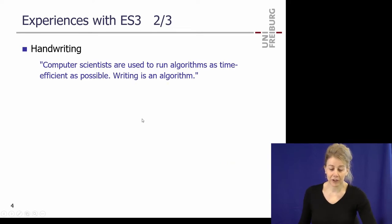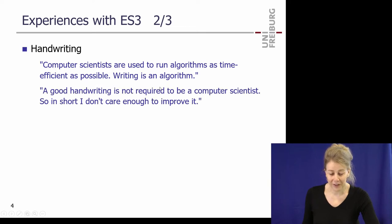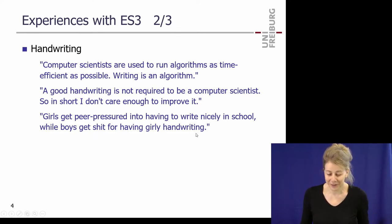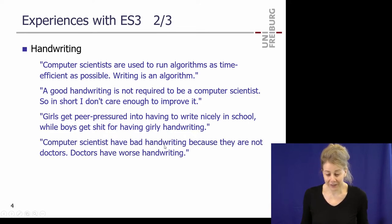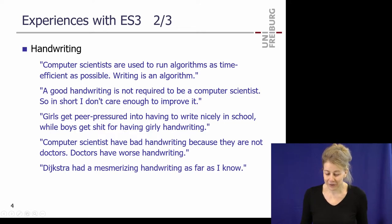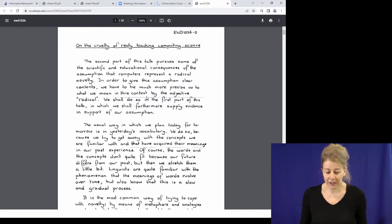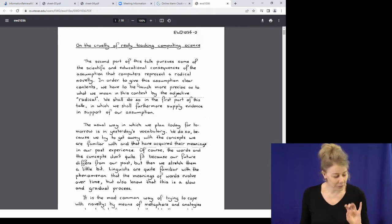On handwriting — some comments: 'Computer scientists are used to running algorithms as time-efficiently as possible. Writing is an algorithm.' Very matter-of-factly. 'It's not required to be a computer scientist. I don't care enough to improve it.' 'Sexism in 2022 is still very real. Girls get peer pressured into having to write nicely. Boys get flak for having girly handwriting.' 'Computer scientists have bad handwriting because they are not doctors — doctors have worse handwriting.' Dijkstra had a mesmerizing handwriting. He was a very special, strong, opinionated personality, also a bit obsessive.